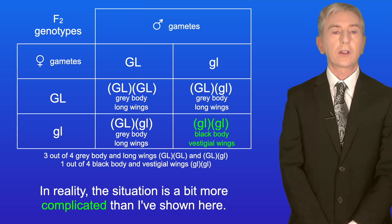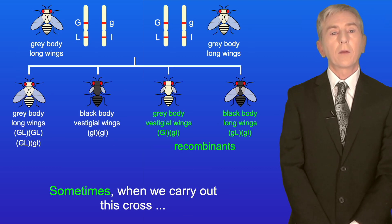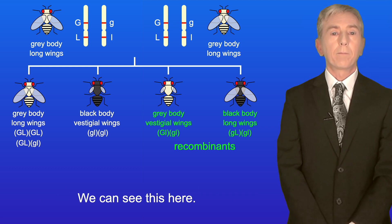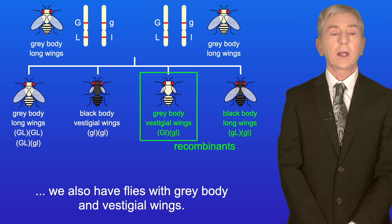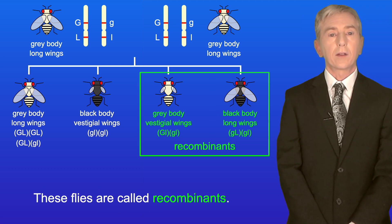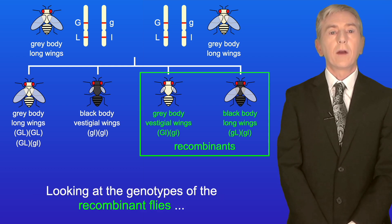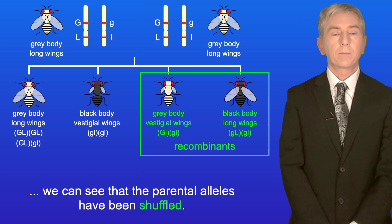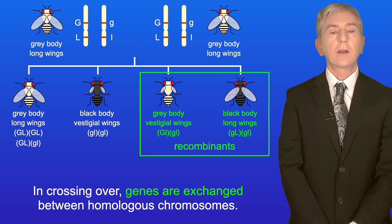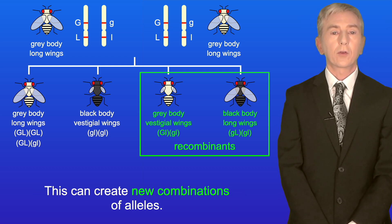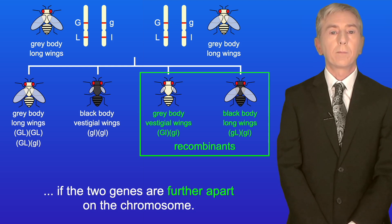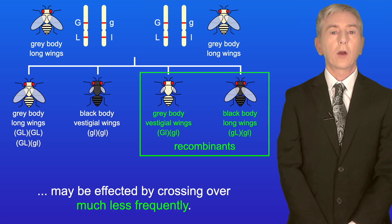In reality the situation is a bit more complicated. Sometimes when we carry out this cross we also produce a small number of flies with different phenotypes from the parents — these are called recombinants. As well as the expected offspring, we also have flies with grey body and vestigial wings, and flies with black body and long wings. Looking at the genotypes of the recombinant flies, the parental alleles have been shuffled. This shuffling is due to crossing over, which takes place during meiosis, where genes are exchanged between homologous chromosomes creating new combinations of alleles. Crossing over takes place more frequently if the two genes are further apart on the chromosome; genes that are very close together may be affected by crossing over much less frequently.